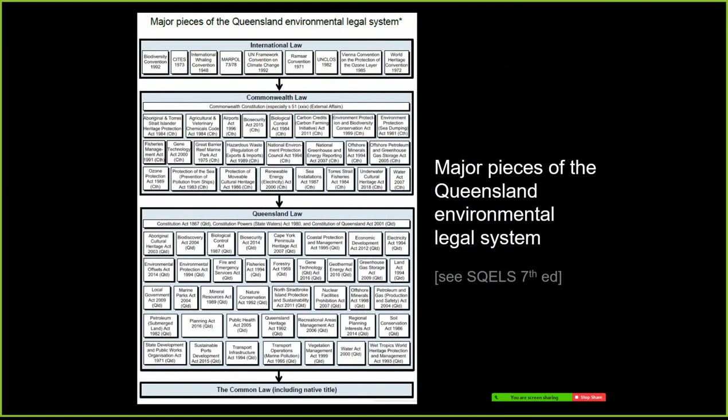There are many different pieces and solving any particular problem involves identifying the relevant bits and bringing them together to build up the picture of the answer for your client. Extending that jigsaw analogy — the diagram I gave you in lecture one, thinking about the environmental legal system in Queensland in four layers: international law at the top, commonwealth or national laws, then Queensland law, and the common law — I hope you find that useful as a conceptual framework for your careers.